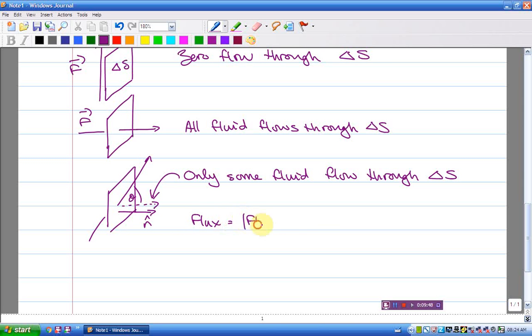Our flux is the amount of flux in direction of N times the area, which is F cos theta delta S.